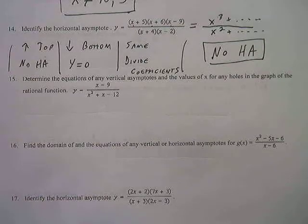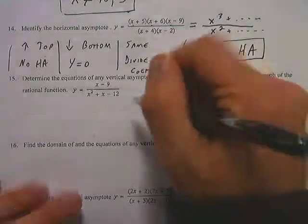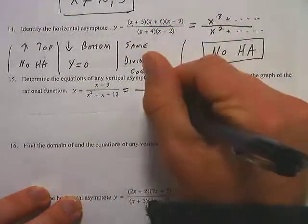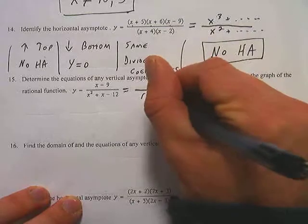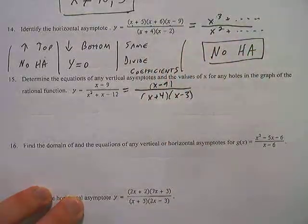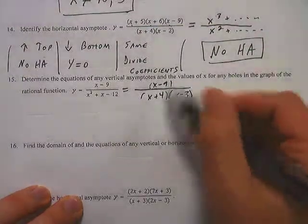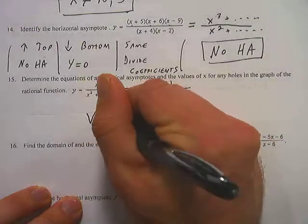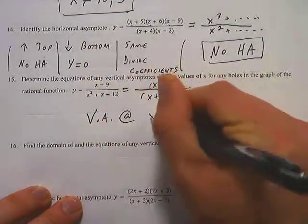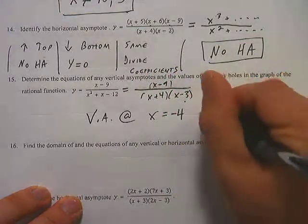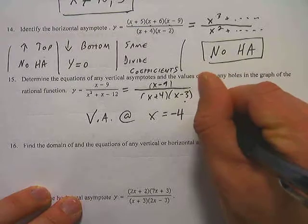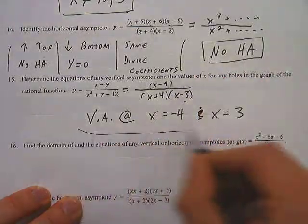Number 15 says: determine the equations of any vertical asymptotes and the values of x for any holes in the graph of the rational function. To do that, you need to factor the denominator. There's still an (x - 9) on top, and on the bottom we factor to (x + 4)(x - 3). If we can cancel anything, it creates a hole. I can't cancel anything here, so there aren't any holes. But there are two vertical asymptotes: x equals negative 4 and x equals positive 3.